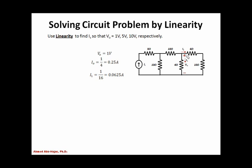Because I know those two currents, I can determine the current through the 10 ohm resistor by KCL. I'll call it I2, and I2 equals Iout plus I1, which is 0.3125 amps. Since I know the current through that 10 ohm resistor, I can find the voltage across it, calling it V2. By Ohm's law, V2 equals I2 times 10 ohms, giving 3.125 volts.